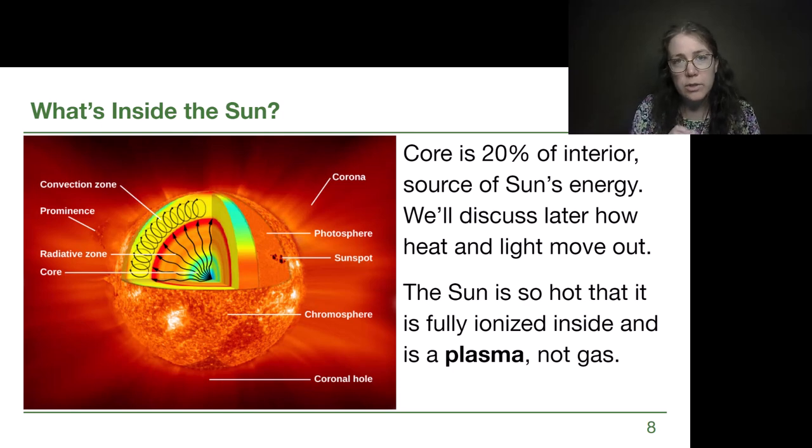So the core of this star, the core of our sun is about 20% of its volume. It's the source of all of the sun's energy, a process that we will talk about in more detail later on. And we can't really treat the sun as being made out of a gas because it is far too hot. All of the electrons have been stripped free of the atomic nuclei. And so the material in the sun acts as a plasma, a fourth state of matter, instead of a gas.